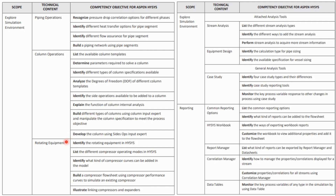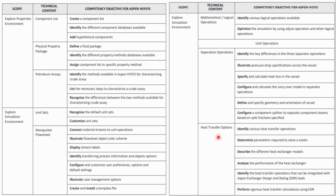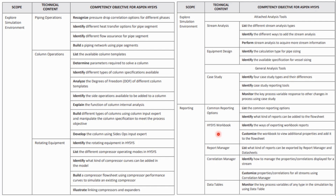For rotating equipment, you should be able to identify the different types: compressors, turbines, and pumps. List the different compressor operating models — screw compressor and centrifugal compressor — and know what type of compressor is used for what application or how to switch between them. Identify what kind of compressor curve can be added in the model, and understand how to link compressors and expanders, including performance curves and compressor-expander linkage. So rotating equipment, column operations, piping operations, separations, and heat transfer are the five important parts for the S-Penheises test.